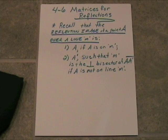Or it will be A prime such that line M is the perpendicular bisector of segment A, A prime, if A is not on line M.